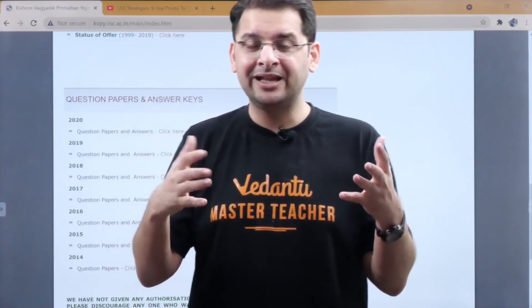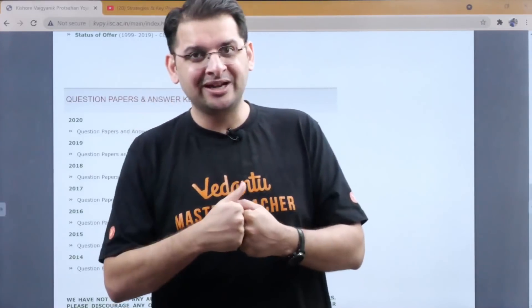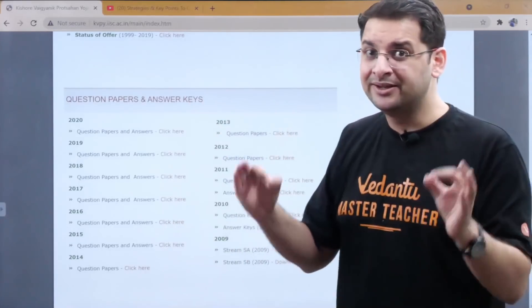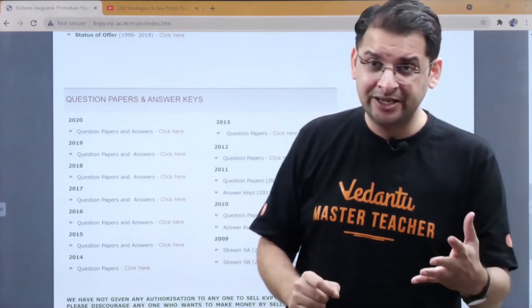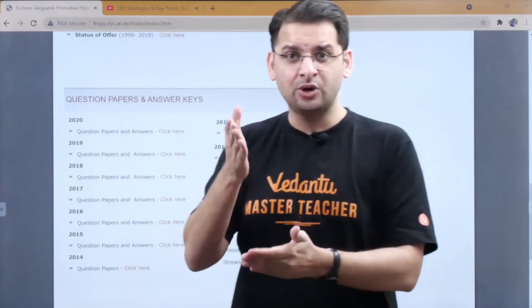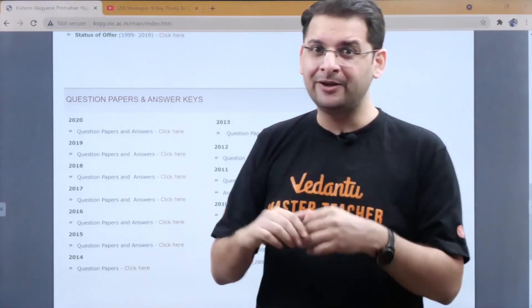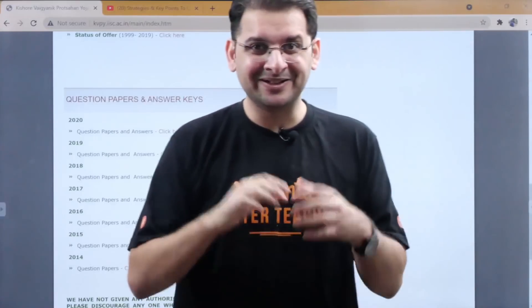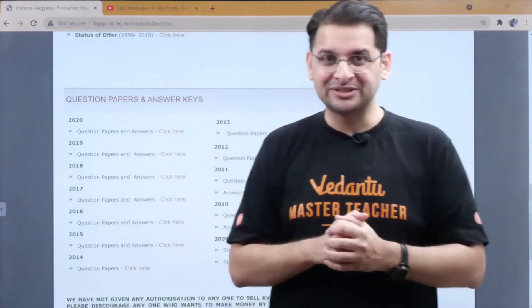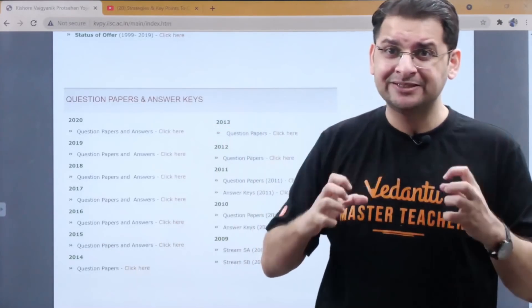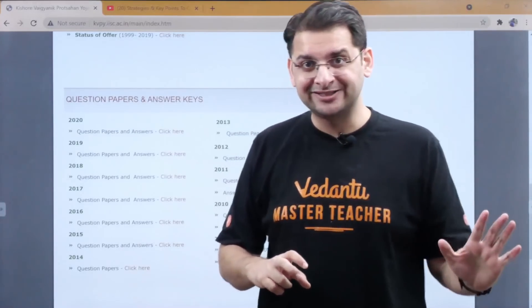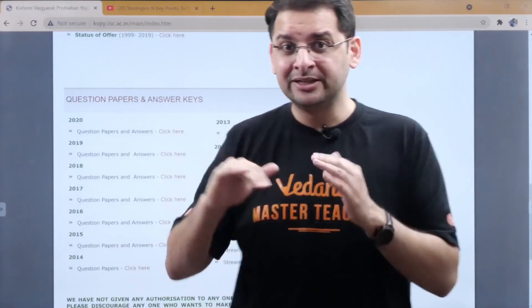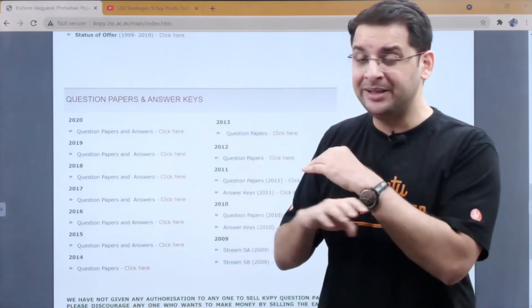12th students in particular have a challenge deciding which two subjects to attempt in part 2 of the SX paper. The approach is the same: from the 2009 to 2014 questions, document them, write them out, work on each question, look for solutions on Google, ask your school teachers, institute teachers, or me. By doing these 6 practice papers, you will gain the confidence to decide which two subjects to attempt in part 2 of KVPY. This is the recommended approach for attempting previous year questions.